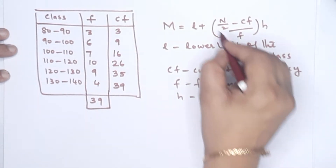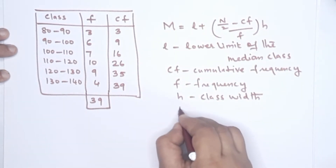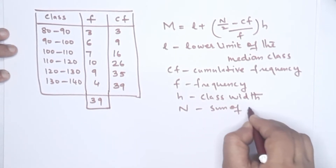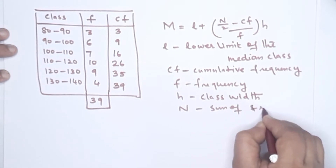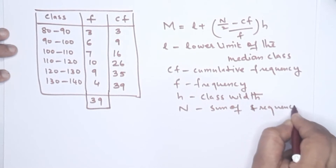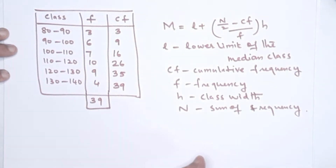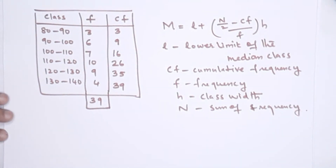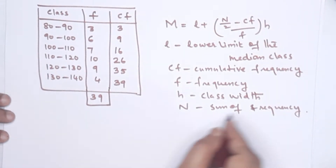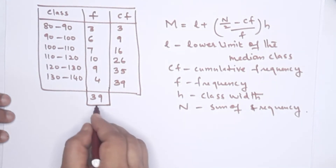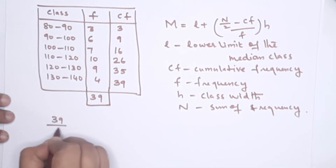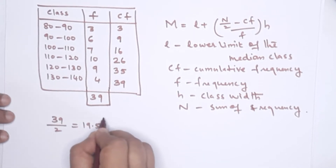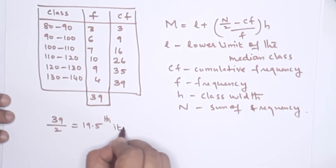H is the class width. N is the total number — sum of frequency. N by 2 is 39 by 2, that means 19.5. This is the 19.5th item.